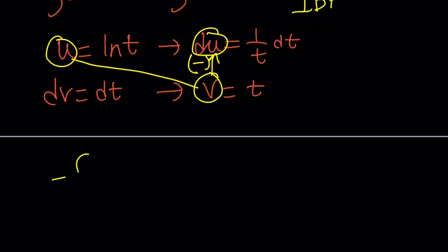there's a minus sign, which I have to consider. So I'll put that in the front. And then use my rule. U times V, which is tln t,